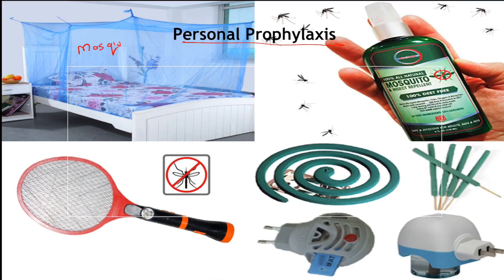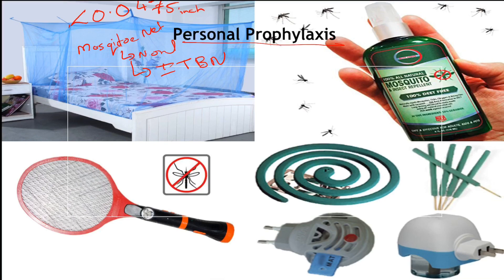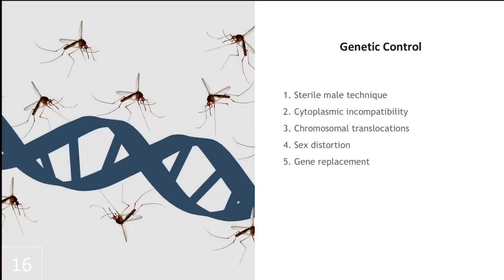Personal protective methods include mosquito nets — both normal mosquito nets and insecticide-treated bed nets. The size of the opening in the net should be less than 0.0475 inches, or 150 holes per square inch. Other methods include mosquito repellents, coils, mosquito swatters and vaporizers. Genetic methods of mosquito control include the sterile male technique, cytoplasmic incompatibility, chromosomal translocation, sex distortion and gene replacement.